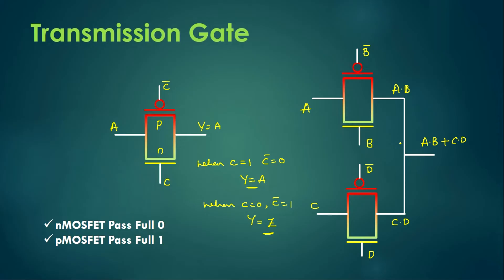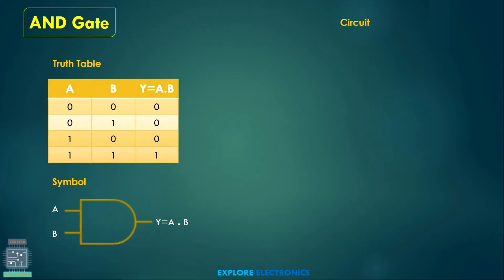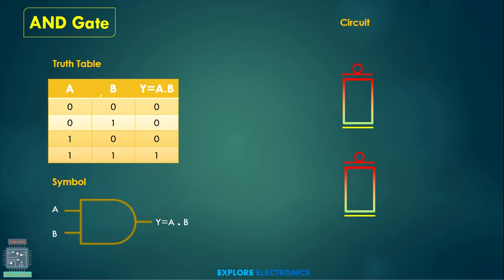Let us understand how to construct an AND gate using transmission gates. The truth table of an AND gate gives A·B as the output, with four input combinations. To construct this using transmission gates we require two transmission gates since we have two inputs A and B. I connect the transmission gates and join their outputs, assigning B as the control input.